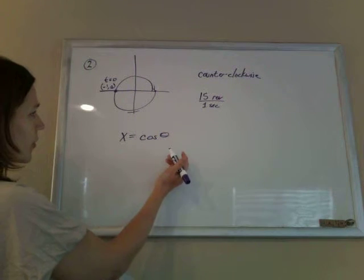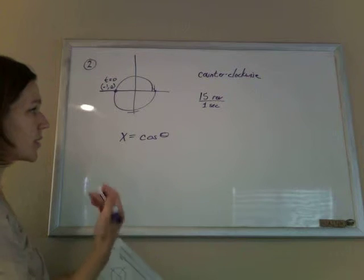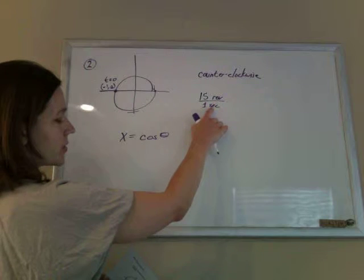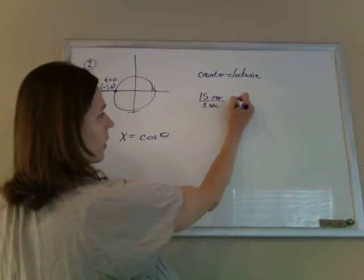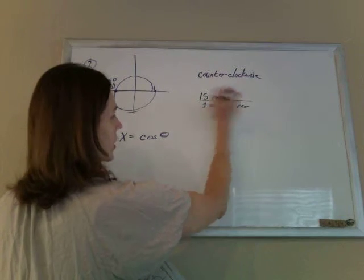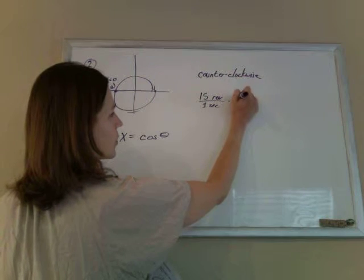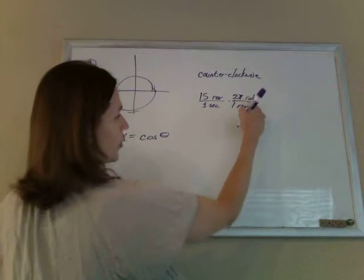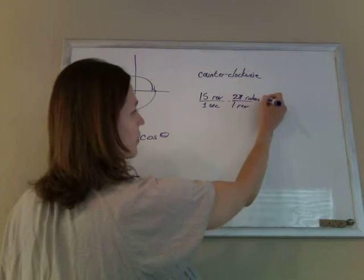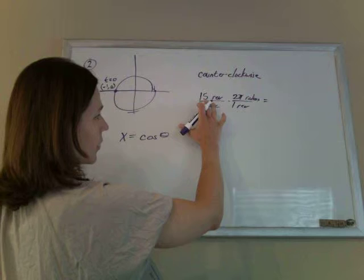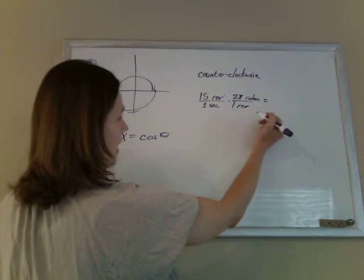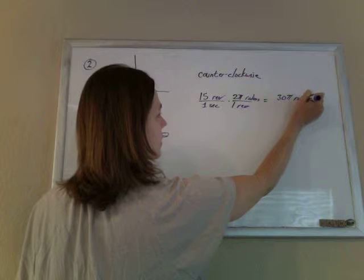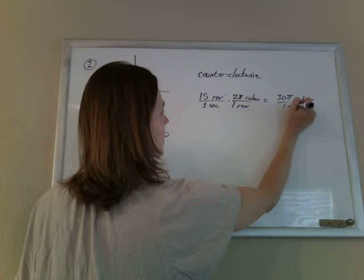So now, though, they want us to express it as a function of time, not as a function of theta, and they tell us we're going 15 revolutions in one second. In every revolution, we're going 2π radians, right? You don't have to write radians. It's the beauty of radians. They're unitless, but so we can see it. So that means that every second we're going 30π radians in one second.